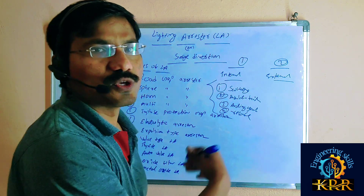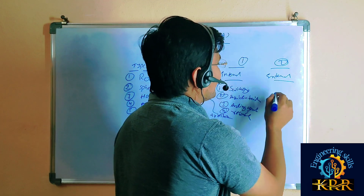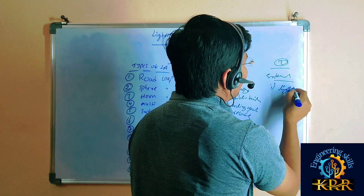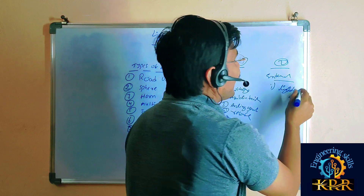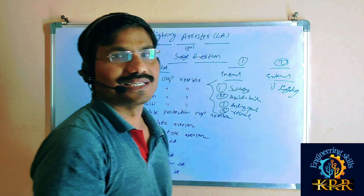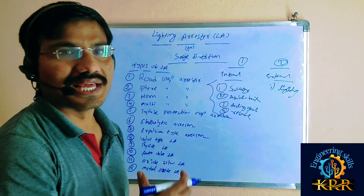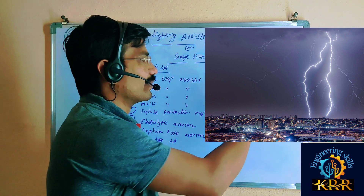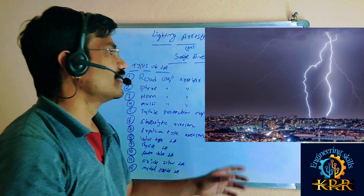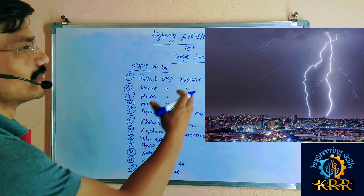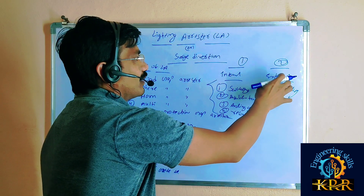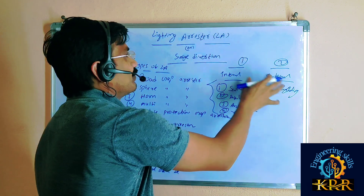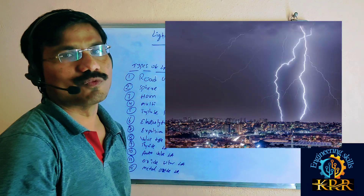For the external cause, one is lightning. Lightning means in the rainy season, heavy lightning occurs — this is the external reason. A lightning arrestor is used because of this high voltage produced externally.